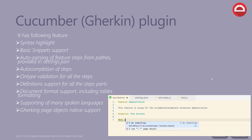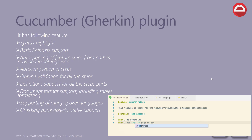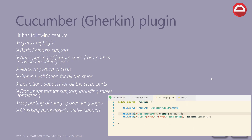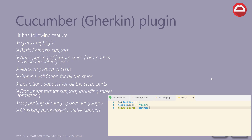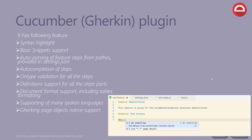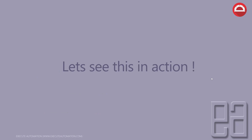It has syntax highlighting, basic snippet support, auto parsing of feature steps from paths provided in the settings.json file, auto completion of steps, on-typing validation for all steps, definition support for all step parts, document format support including table formatting as you can see in the GIF file. It also supports go-to-definition, many spoken languages, and Gherkin page object native support. These are really cool features that were missing with Visual Studio Code and TypeScript with Protractor.